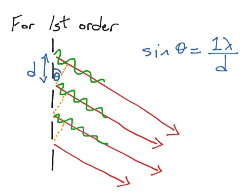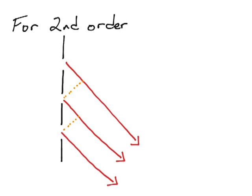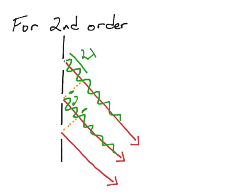For the second order image, we have a similar picture with rays of light coming from the diffraction grating, but this time we can fit two wavelengths of path difference into that distance rather than one. The next ray also fits in two wavelengths. So the distance in the triangle is equal to two lambdas from one slit to the next.